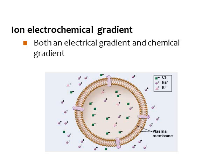Some gradients are ion or electrochemical, involving both an electrical gradient and a chemical gradient. For example, different types of ions — chlorine, sodium, and potassium — are distributed inside and outside the cell. Outside the cell you may have many positive sodium ions, while inside you have chlorine atoms. This creates not only a difference in ion distribution but also a positive charge outside and negative charge inside — that electrical gradient as well.